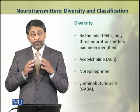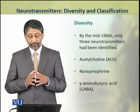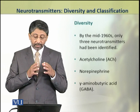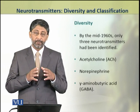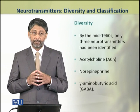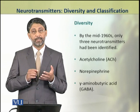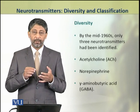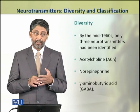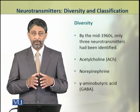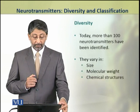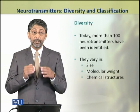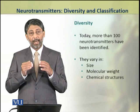By the mid-1960s there were only three neurotransmitters that had been discovered and identified. These were acetylcholine, norepinephrine, and gamma-aminobutyric acid, commonly known as GABA. But now more than 100 neurotransmitter molecules have been identified.